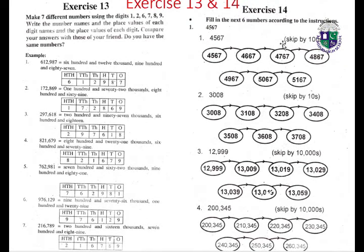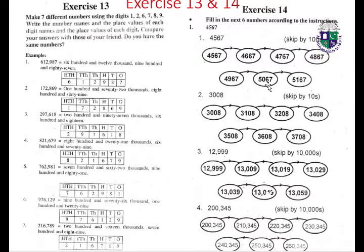Exercise fourteen: fill in the next six numbers according to the instructions. 4,567 — skip by hundreds: 4,667; 4,767; 4,867; 4,967; 5,067; 5,167. 3,008 — skip by tens: 3,108; 3,208; 3,408; 3,508.